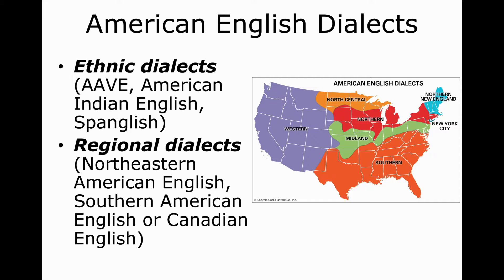Others would divide the dialects in terms of the territory where they are spread. Hence, you have Northeastern American English, Southern American English, Canadian English, and other varieties. Thus, American English is an umbrella term that embodies a number of dialects and accents spoken across America. Apart from social and regional dialects, one can distinguish a regionally neutral dialect, which is called General American.